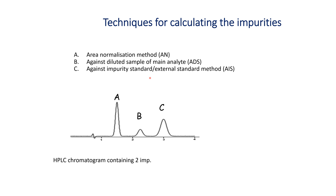Let us consider an API impurity chromatogram which contains three peaks. Out of three peaks, the main peak is due to the API — this is peak A — and B and C are impurity peaks. The question is: how will impurities B and C be calculated by the above methods?